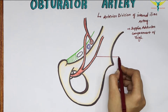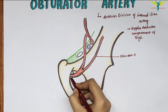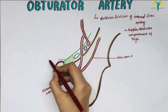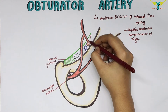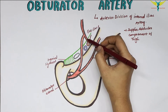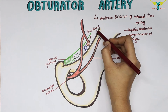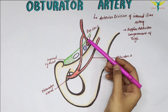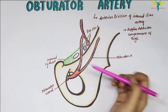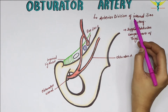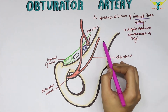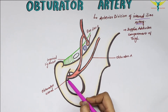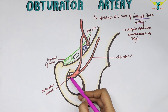This is the obturator artery, this is the obturator canal, and this is the inguinal ligament. This is the external iliac artery — that is the junction between the external iliac artery and the femoral artery. The obturator artery originates in the pelvis just below the umbilical artery. After its passage through the obturator canal, it emerges into the medial compartment of the thigh.